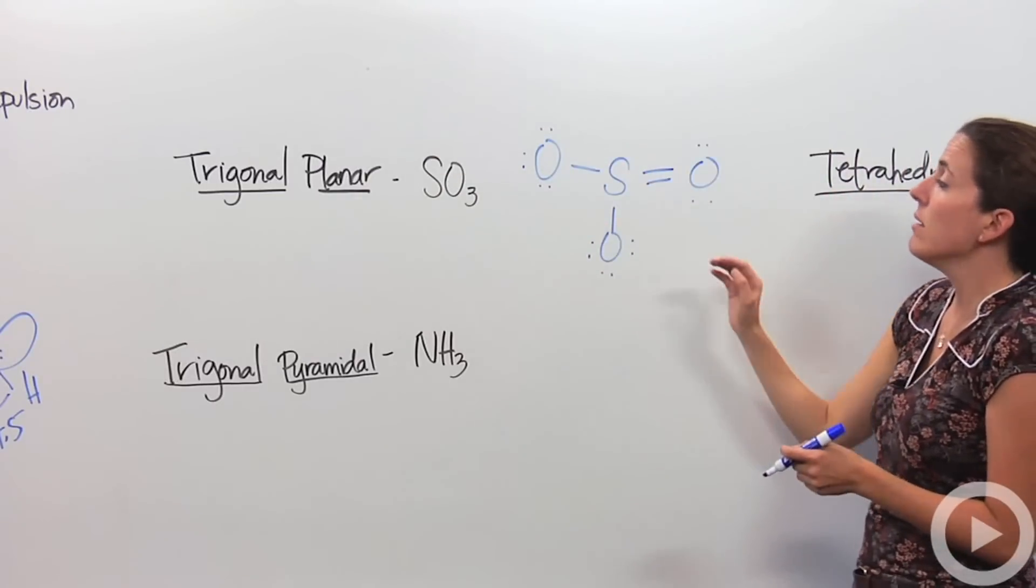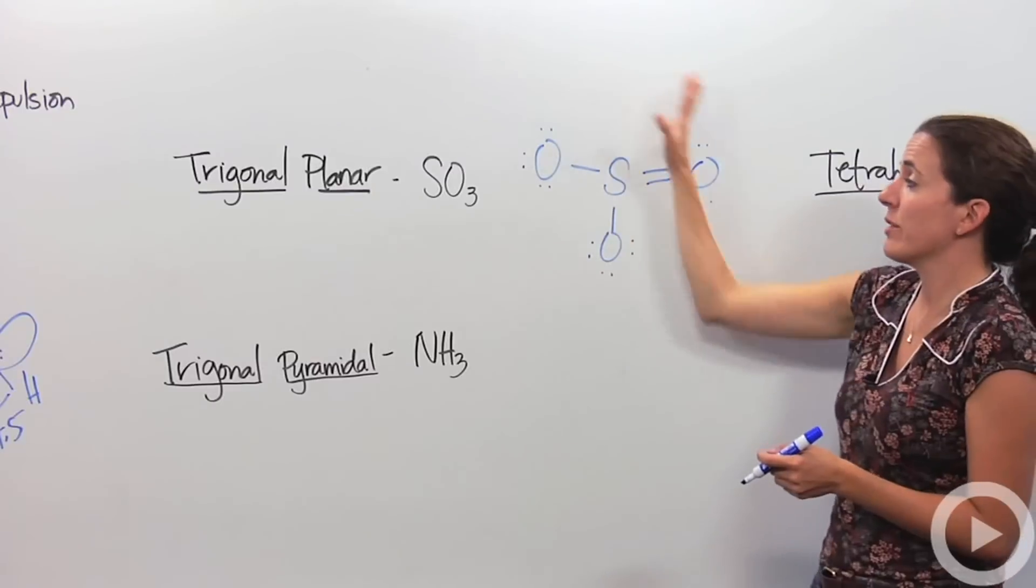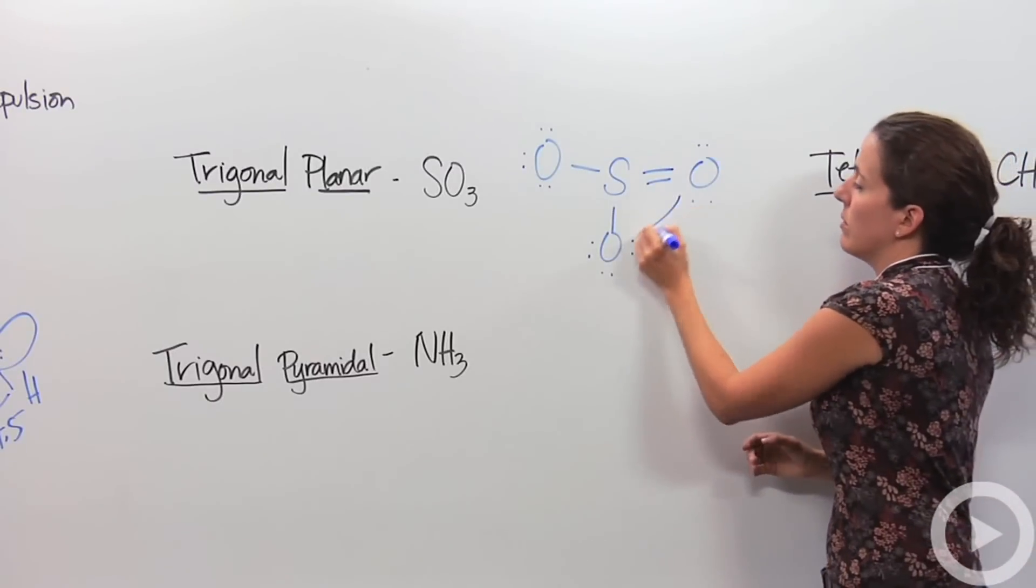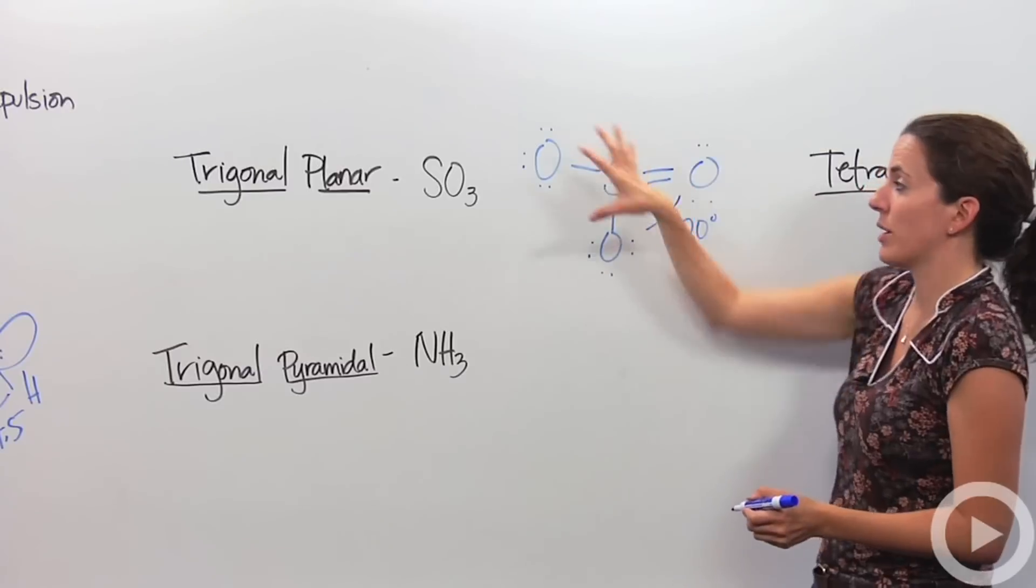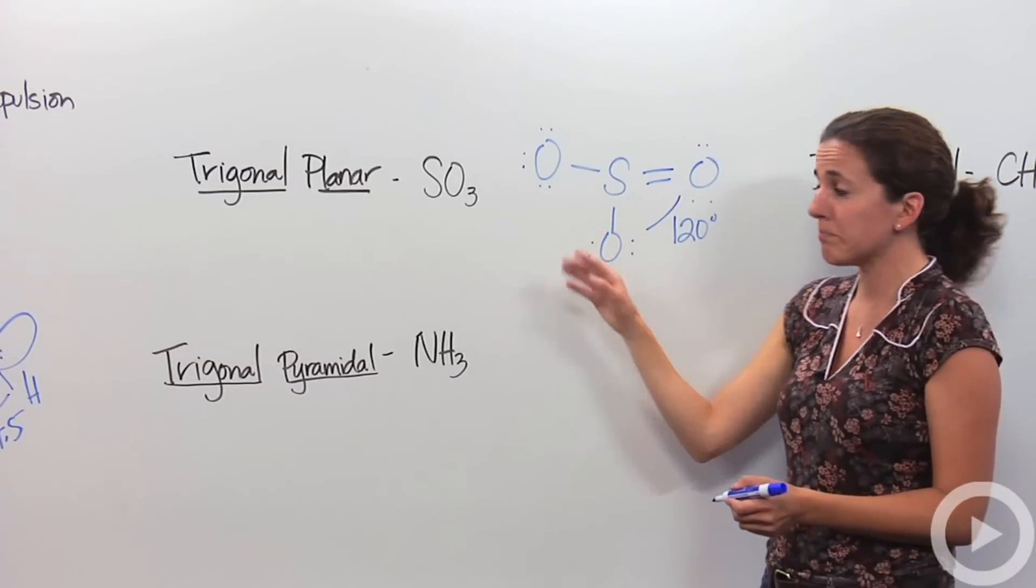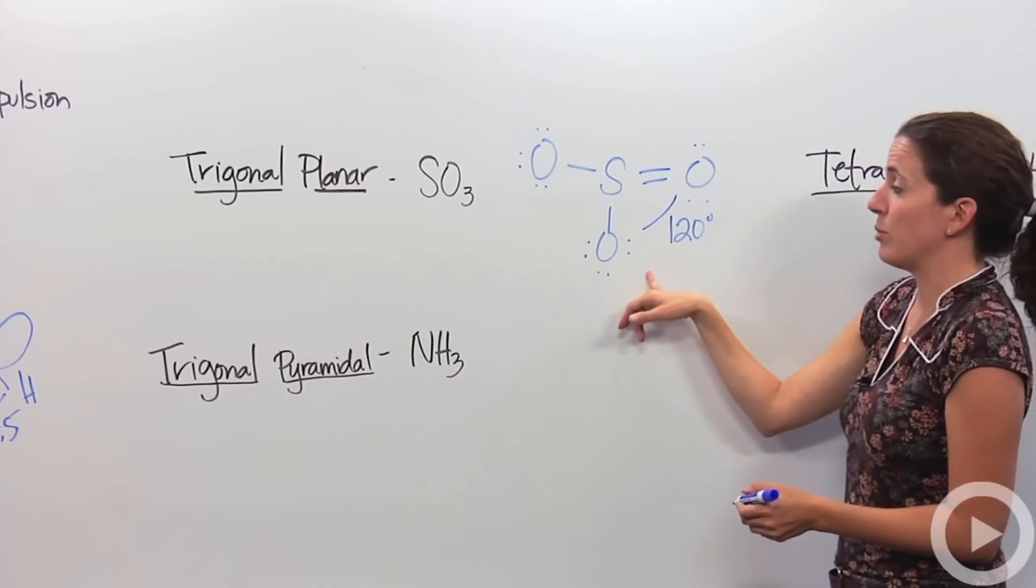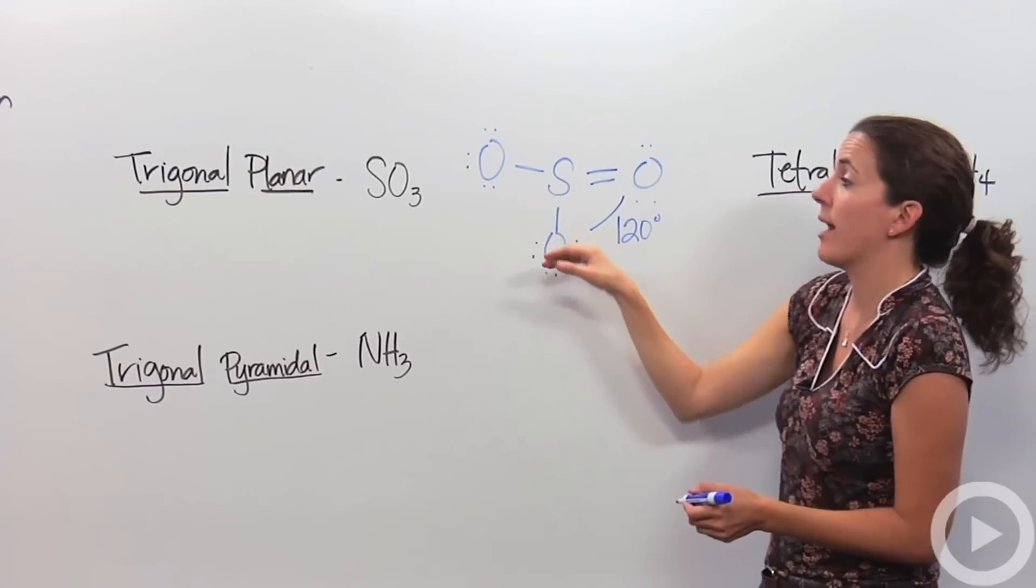They are as far apart from each other as possible. So this is going to be 120 degree angle between the different oxygens. They're actually going to be equally spaced throughout. So that's an example of trigonal planar. There's three atoms around the central atom, hence trigonal.